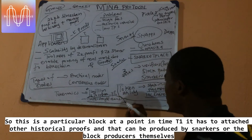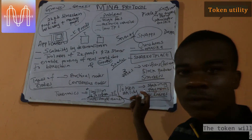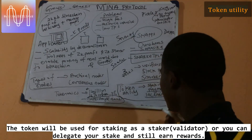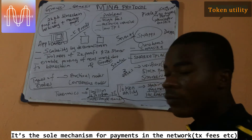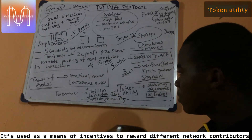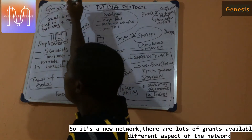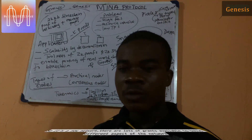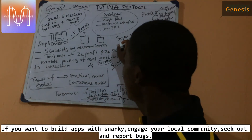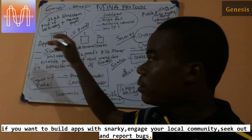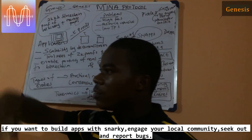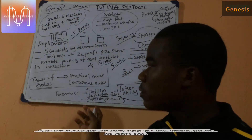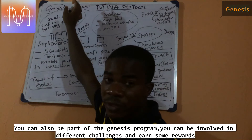The token is used for staking — you can stake to become a staker or delegate your stake. It is also used for payments and incentives. For new network participants, there are a lot of grants available to build applications. Whether you want to build Snapps, use ZK proofs, work on community management, or join the ambassador program, there are grants and opportunities available.